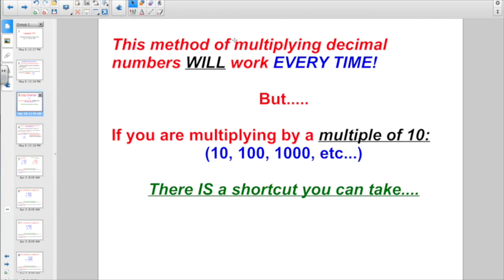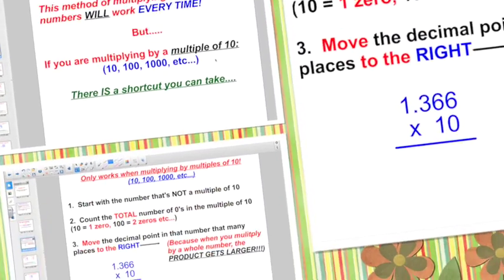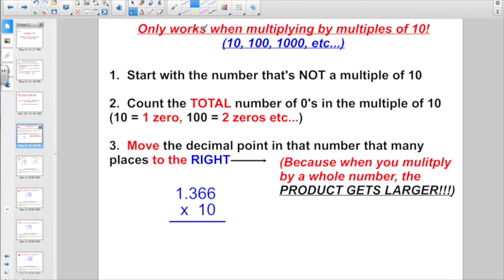That method we just described of multiplying decimal numbers will work every time. But if you're multiplying by a multiple of 10, either 10, 100, 1,000, 10,000, whatever, there is a shortcut you can take. And this is only going to work when multiplying by multiples of 10.